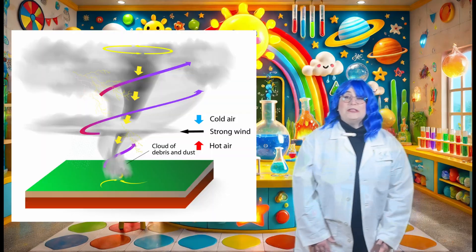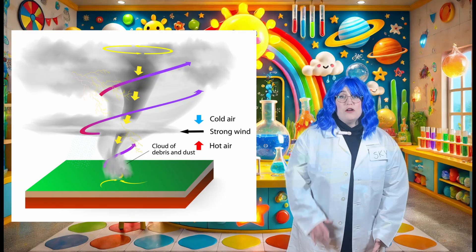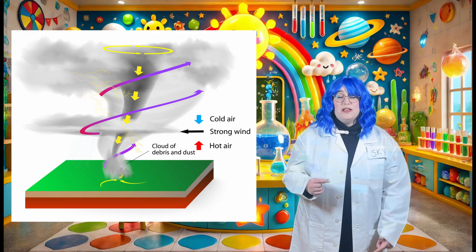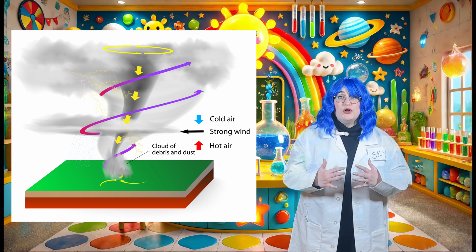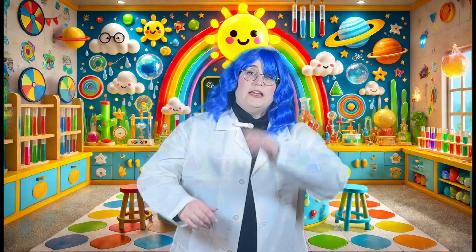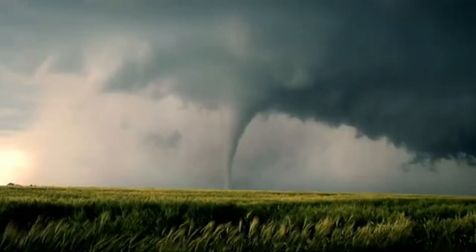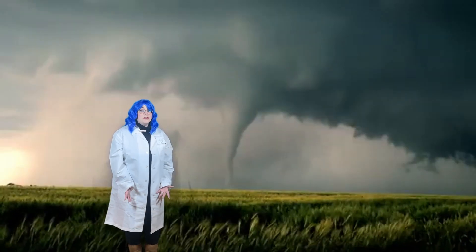Science with Skye! So, what is a TORNADO? A TORNADO is a super strong spinning cloud that comes down and touches the ground. It looks like a big twisty funnel coming down from the clouds. Whoa, look at that TORNADO!